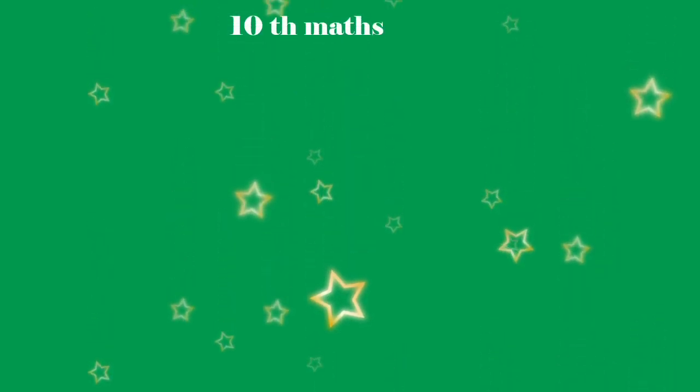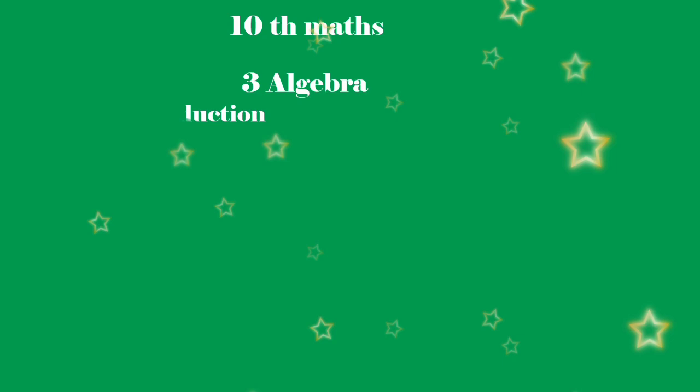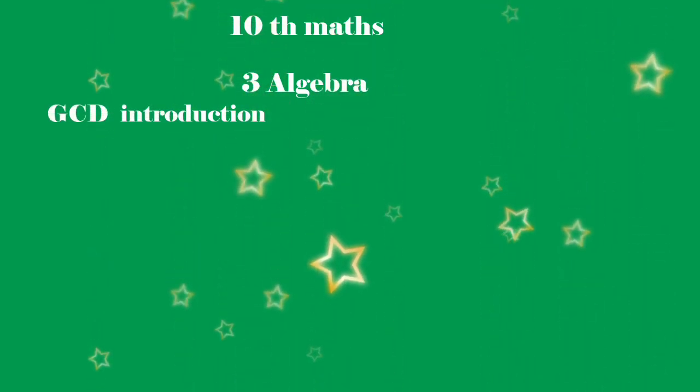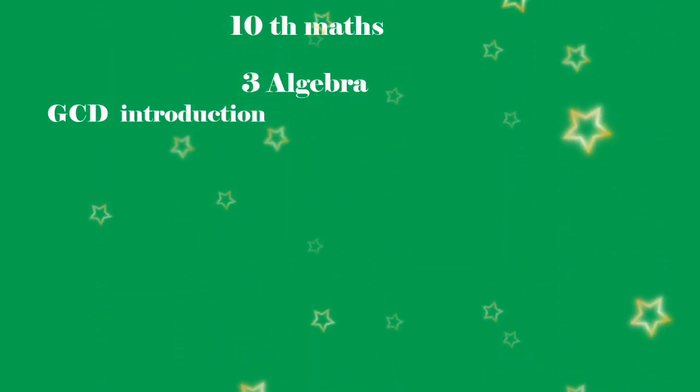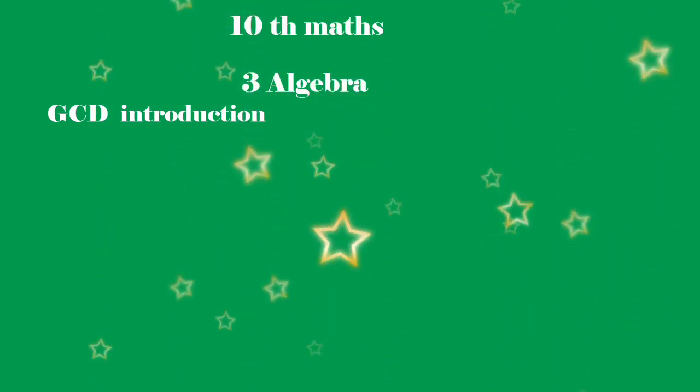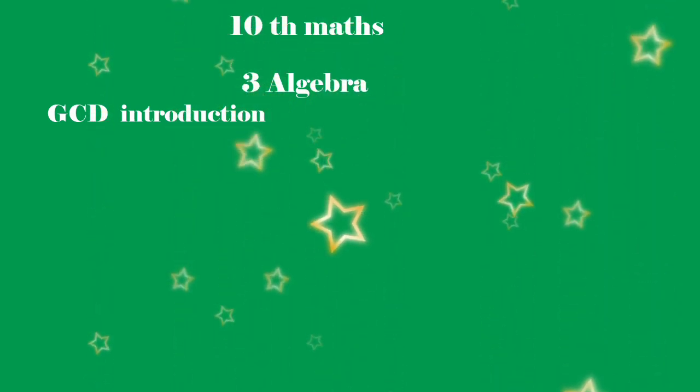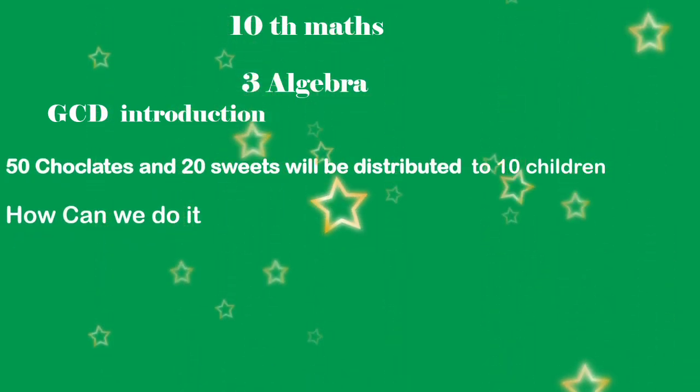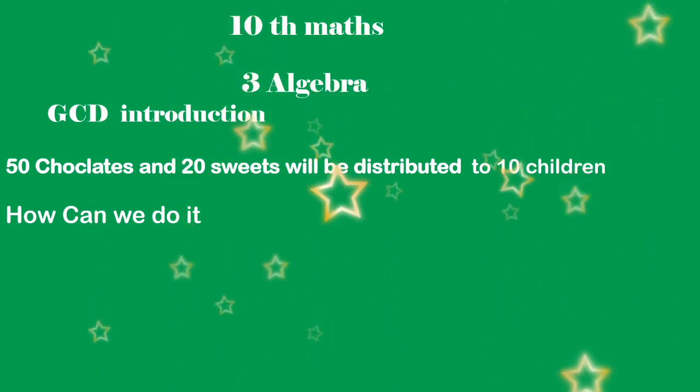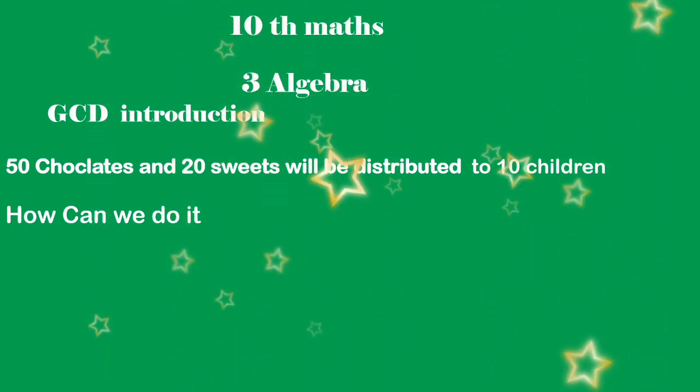Class 10 math, chapter 3 algebra. In this session, I'm going to give a brief introduction for GCD, the greatest common divisor. Here I'm taking a real-life problem: I have 50 chocolates and 20 sweets that will be distributed to 10 children. How can we do it?